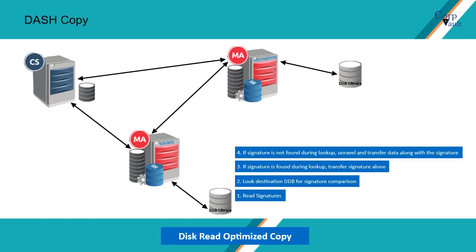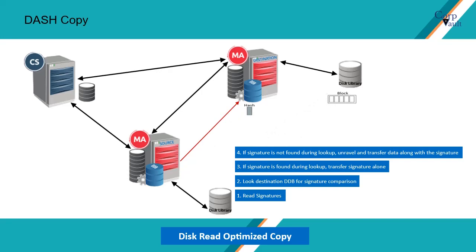If the signature is new — that is, the data block is not present on the destination media agent — then the data is unraveled on the primary media agent. Data is compressed, divided into blocks based on the block size, and then signatures are generated for each block on the primary media agent. The data blocks and the signatures are transferred to the destination media agent, where the data blocks are stored on secondary storage and the generated signatures are stored in the DDB.